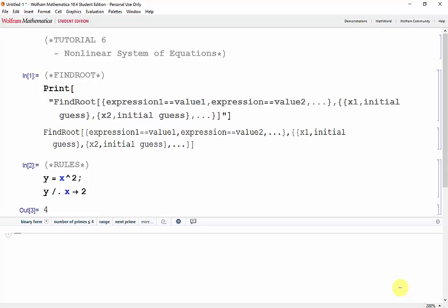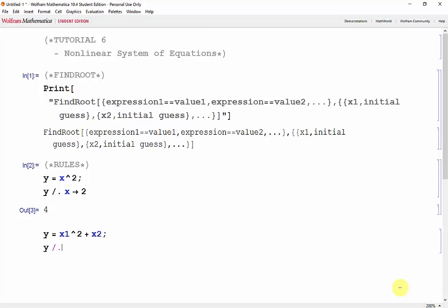Now let's say we have a multiple variable expression or function. So y is equal to x1 squared plus x2. We can evaluate it using a vector containing rules. So y with a rule where x1 goes to 1 and x2 goes to 2, Shift-Enter.